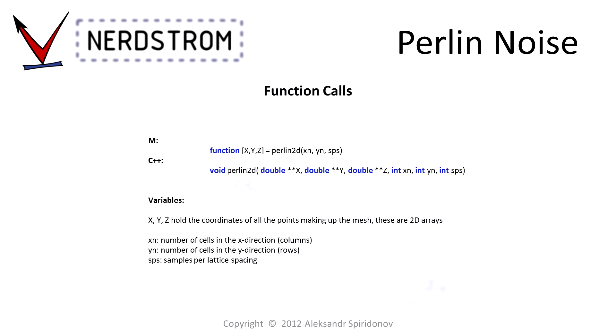The implementation that I will be covering in this video is that of a function which will generate a noise map, which can be used for other purposes. In MATLAB code, the function Perlin2D takes in three values and outputs three two-dimensional arrays with coordinate data. In C++ code, the function would receive three input variables and three pointers in which it would store the output. The Xn and Yn input variables specify the number of columns and rows, respectively, in the lattice. And the SPS variable specifies the number of samples per side of the lattice cell.